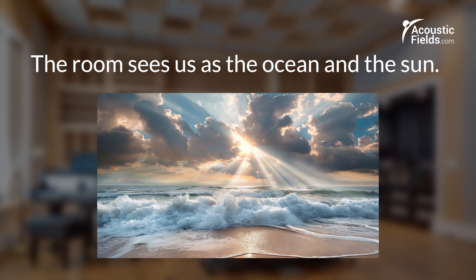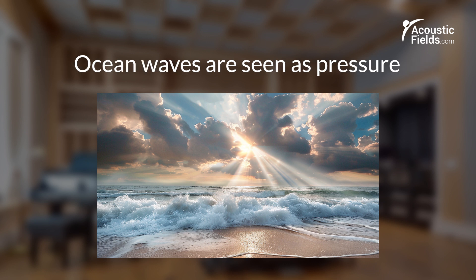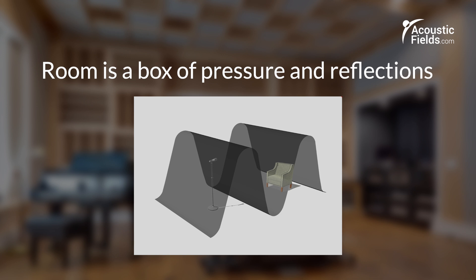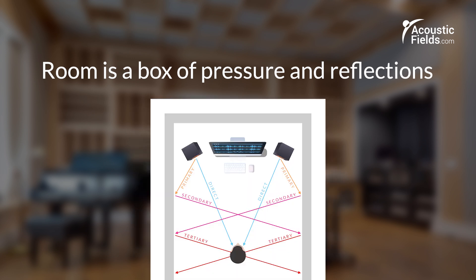Remember from the last video that we have two types of energy in a room. We have pressure and we have reflections — ocean for pressure, and reflections we can think of as sunshine or ray energy. Pressure and reflections are the two variables to focus on, because everything in room acoustics — speaker boundary interference effect, room modes, reverberation, modal frequency — everything is based upon those two variables: pressure and reflection.